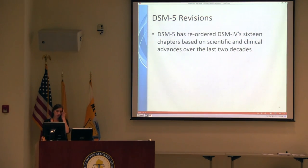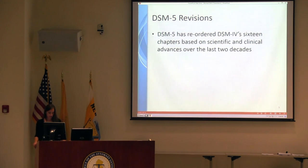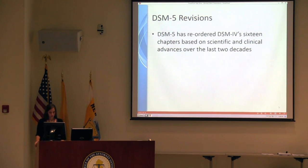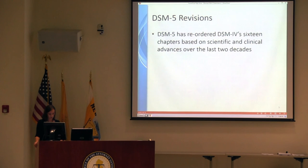The DSM-5 has reordered the DSM-4's 16 chapters based on scientific and clinical advances over the last two decades. The boundaries between many disorder categories are more fluid than the DSM-4 recognized, and many symptoms assigned to a single disorder may occur at varying levels of severity across many other disorders. Scientific evidence places many disorders on a spectrum with closely related disorders that share symptoms. The DSM-5 has reordered its chapters so that disorders are based on shared neural substrates, family traits, genetic risk factors, specific environmental risk factors, biomarkers, temperament, abnormalities of emotional or cognitive processing, symptom similarity, comorbidity, and shared treatment response.